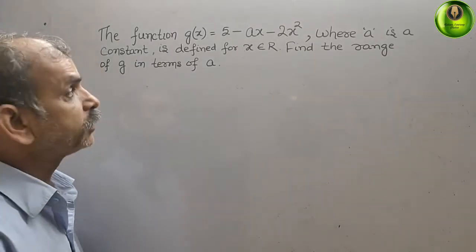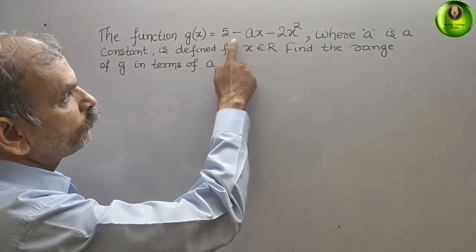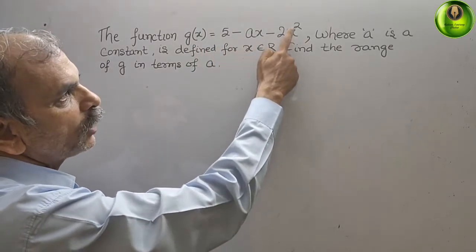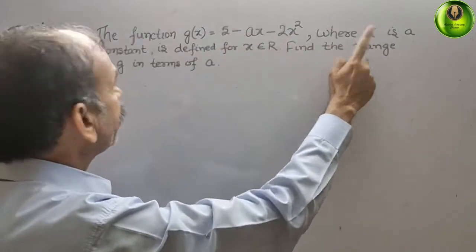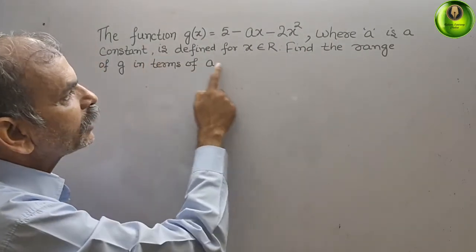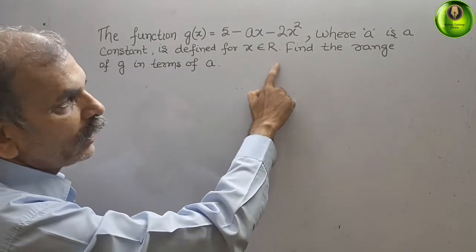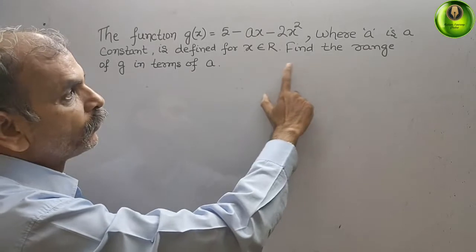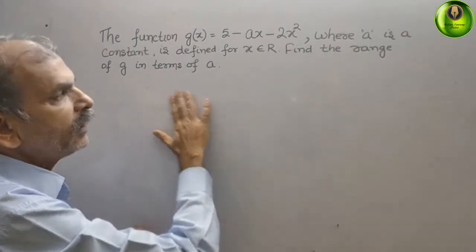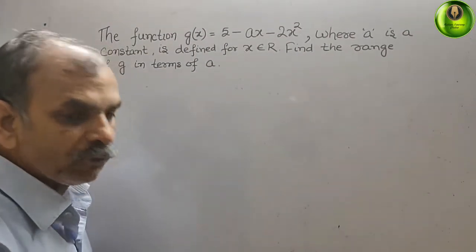The question is: the function g(x) is equal to φ minus ax minus 2x squared, where a is a constant, defined for x belonging to real numbers. Find the range of g in terms of a.